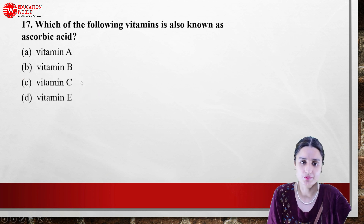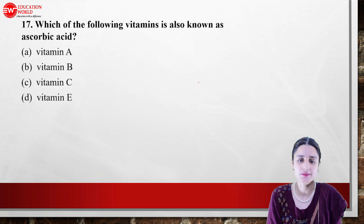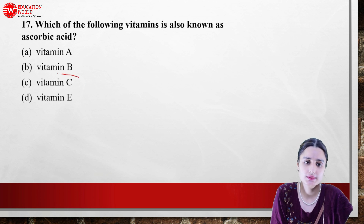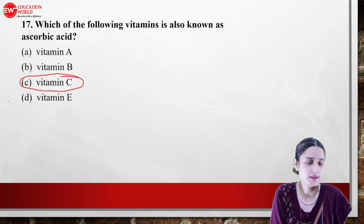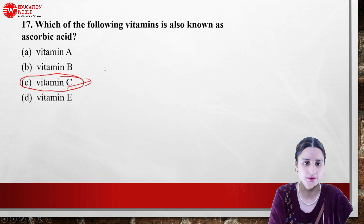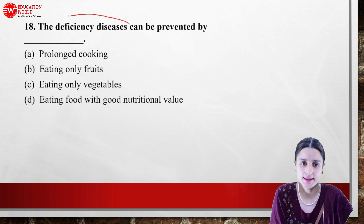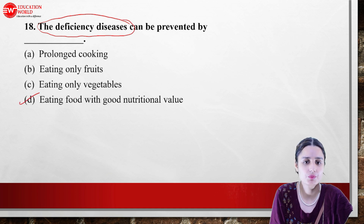My next question: which of the following vitamins is also known as ascorbic acid? Vitamin C is ascorbic acid. Deficiency diseases can be prevented by eating food with a good nutritional balance.